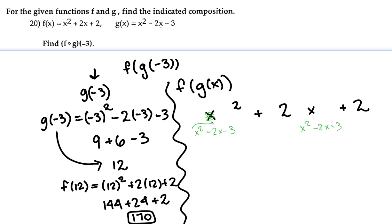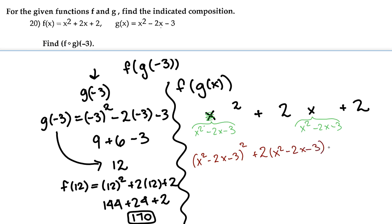So let's write that on one line in red. This is going to be: x squared minus 2x minus 3, all squared, plus 2 times x squared minus 2x minus 3, plus 2.